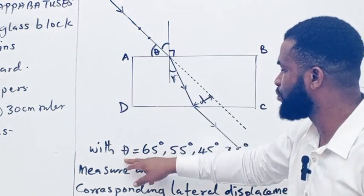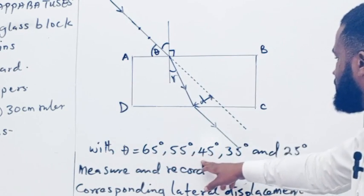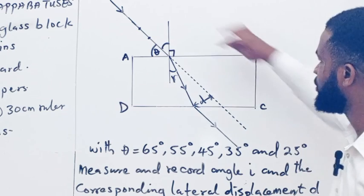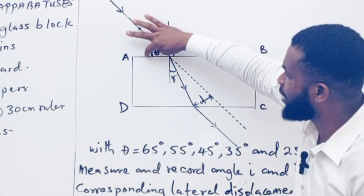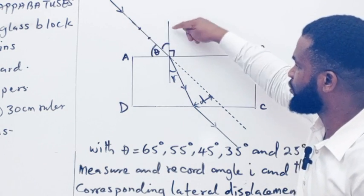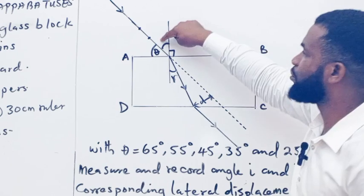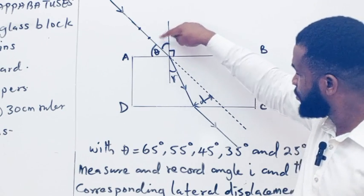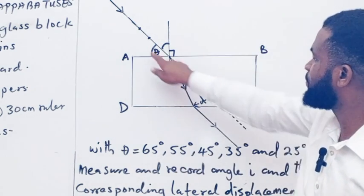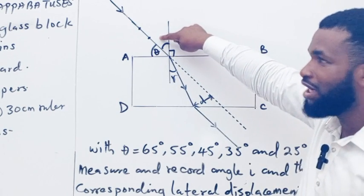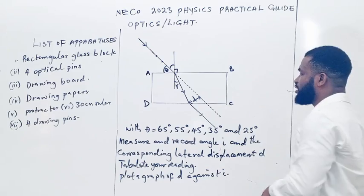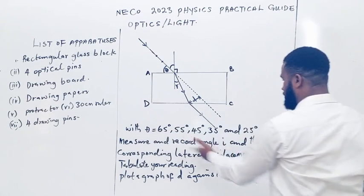They say we should find theta for 65, 55, 45, 35, and 25 degrees. Remember, if this is 65 degrees, what would this place be? Because this is going to be 90 minus 65, which is 25 degrees. So if this place is 55, you know that this is going to be 35 degrees.